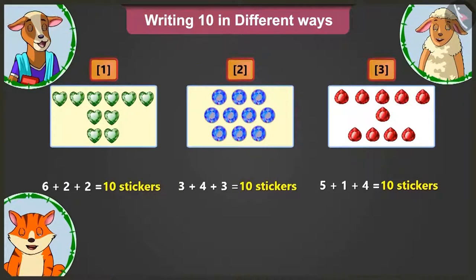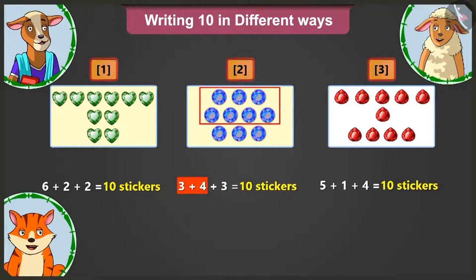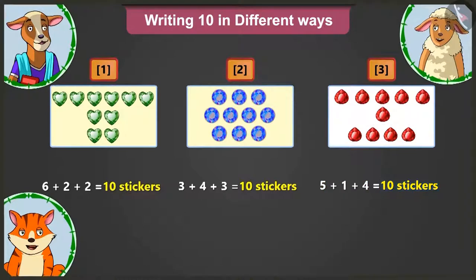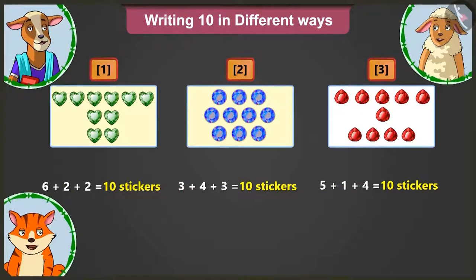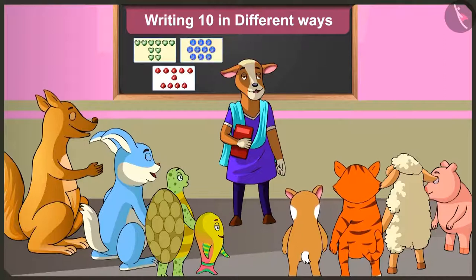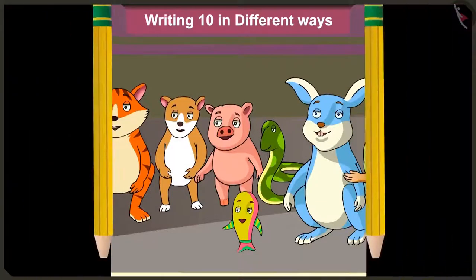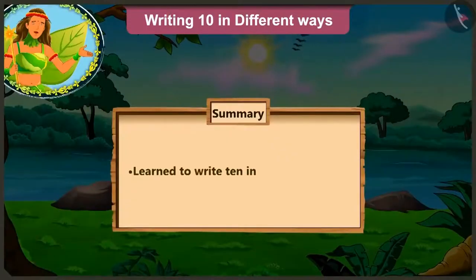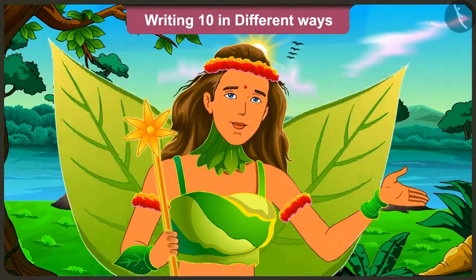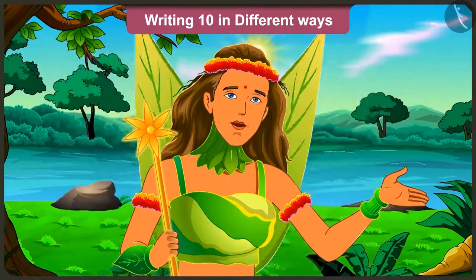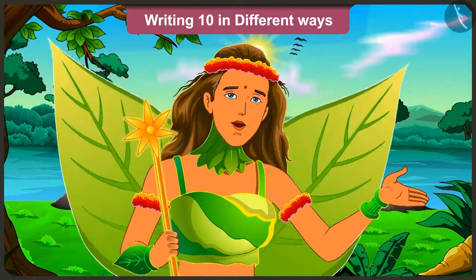So children, today we learned that adding two and two to six is ten; adding four and three to three is ten; and adding one and four to five is also ten. In this way you can write ten in different ways. We have learned how to write ten in different ways. Along with your friends, you too can practice writing ten in different ways. In the next video, we will learn through examples to make bundles of ten and write their sum.